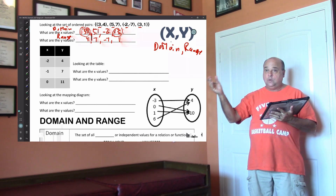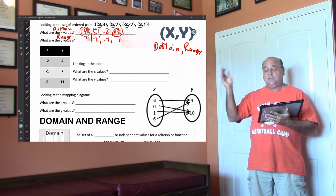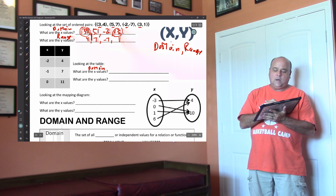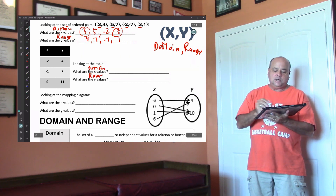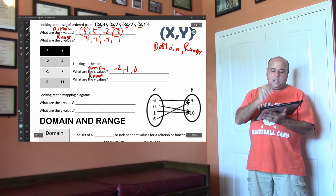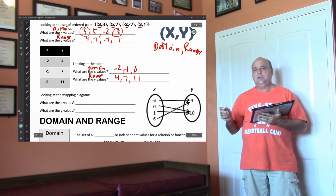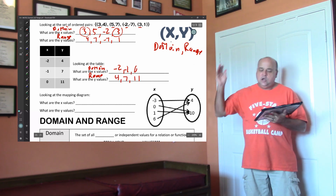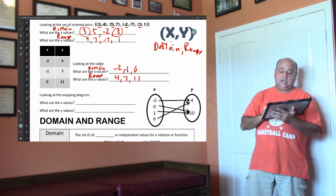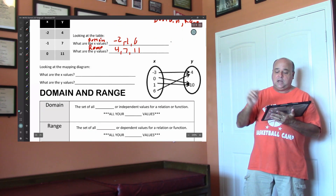All we're doing here is identifying the domain and range. So your x values are your domain, your y values are your range. So my domain would be negative 2, negative 1, and 0, and my range would be 4, 7, 11. That would be a function because the x's are not repeating.